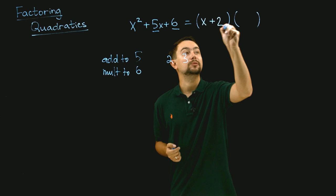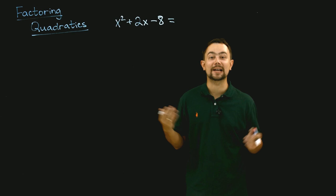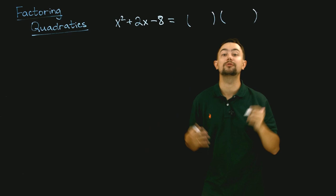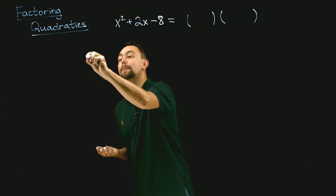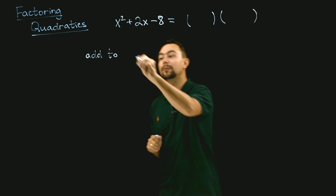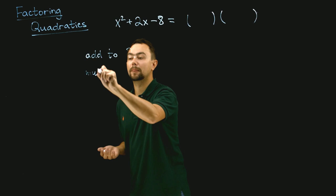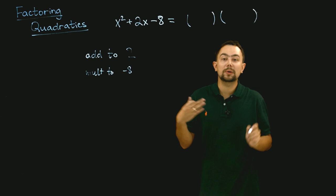Let's look at another example: x squared plus 2x minus 8. Once again, you need to split it into two brackets or two factors. We need two numbers that add to 2 and multiply to minus 8. We can begin by listing all the possible combinations that multiply to 8.